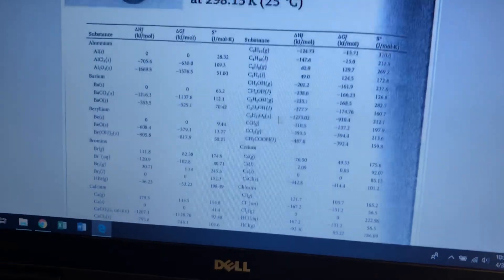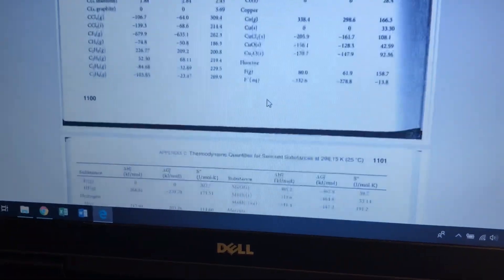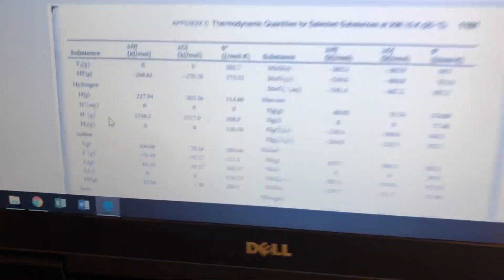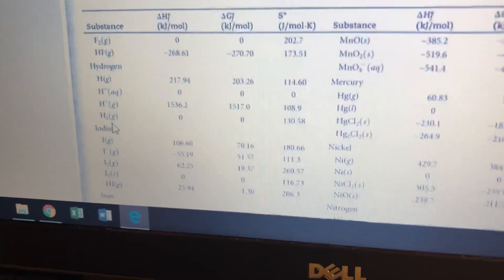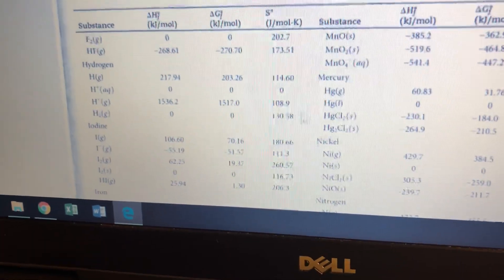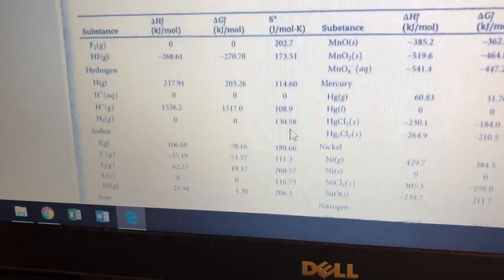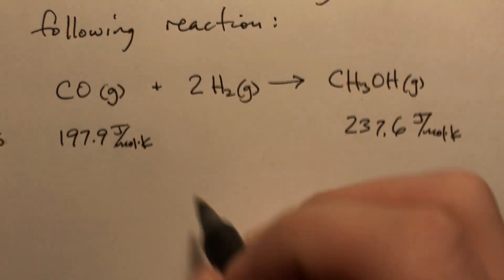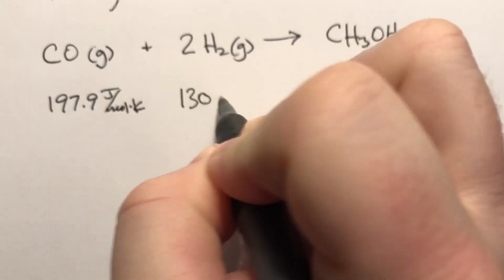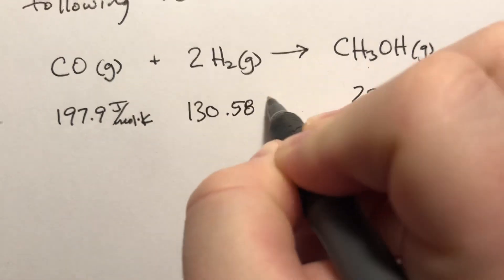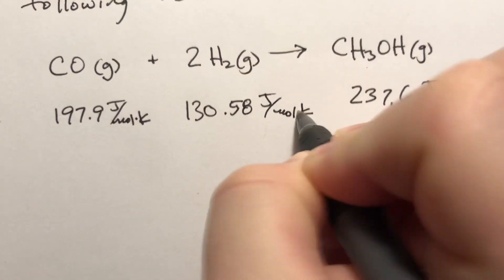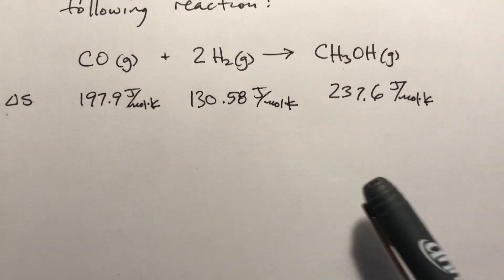Now we need to look up H₂. These are organized by category, so we scroll down from carbon compounds to hydrogen compounds. H₂ gas has an S value of 130.58. Not sure why these all have different decimals, but it is what it is.